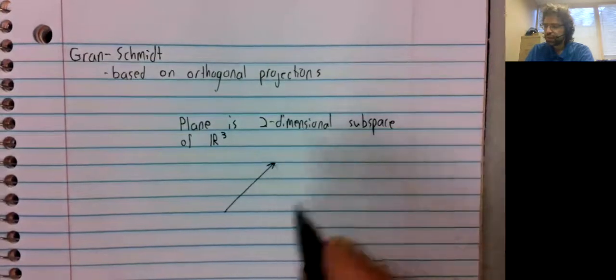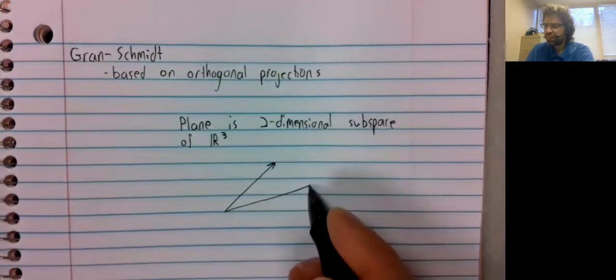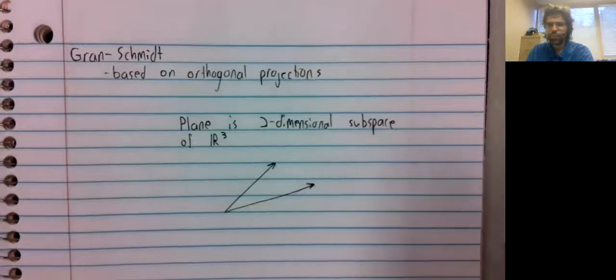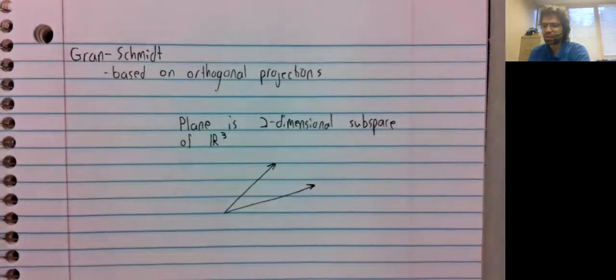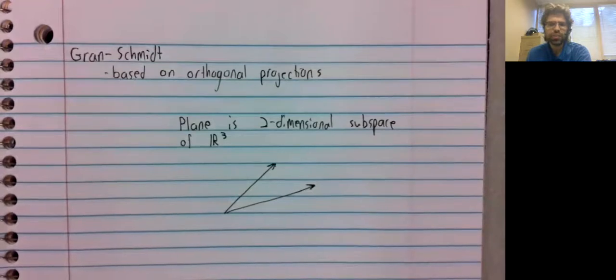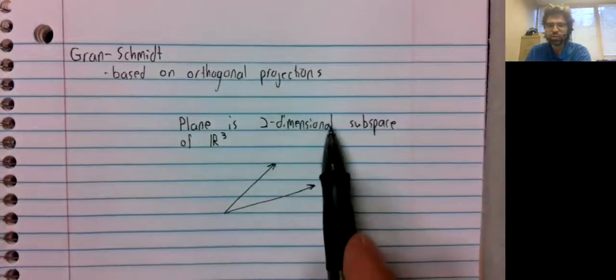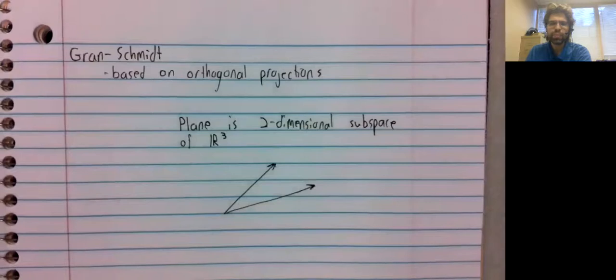And let's say we have these two vectors as our basis vectors. And they are a basis. They are linearly independent. And there are two of them. And two linearly independent vectors in a two-dimensional space forms a basis.